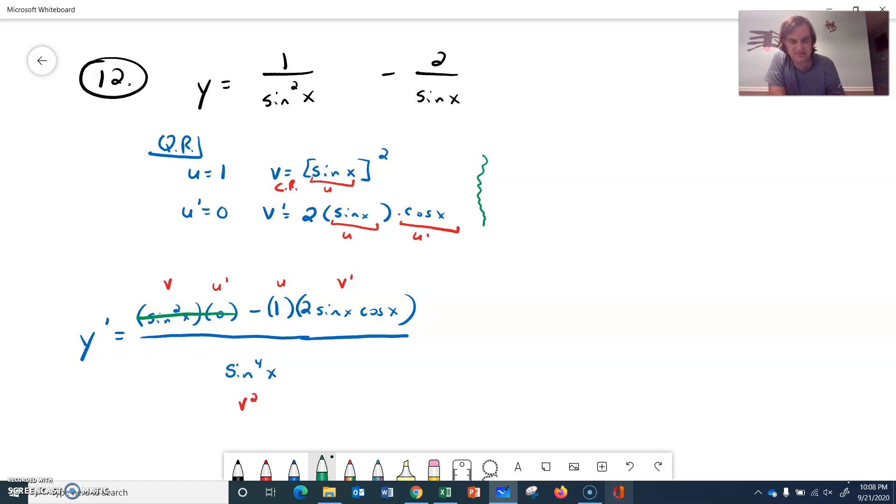And it's v u prime minus u v prime all over v squared. I'm going to go ahead and mark out this 0 part. You can clean that up if you want. It would be negative 2 sine cosine over sine to the 4th. So we could even reduce a little bit up there. But let's see over here what we're going to do. So we still got the minus 2 over sine. So we're going to do another quotient rule.